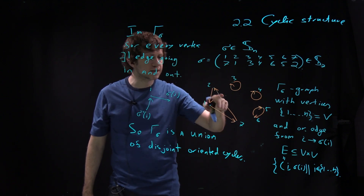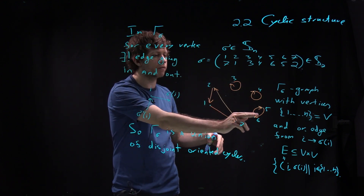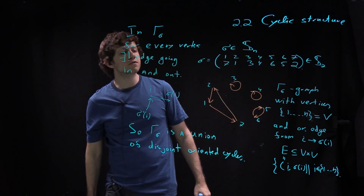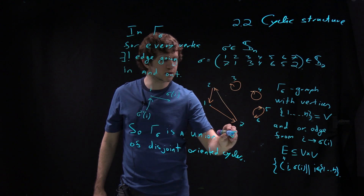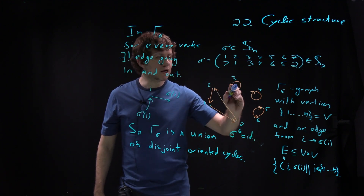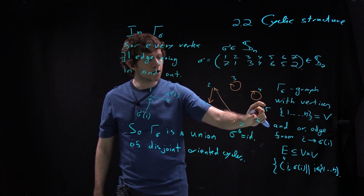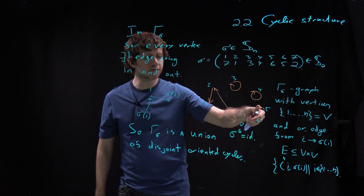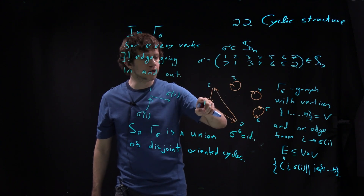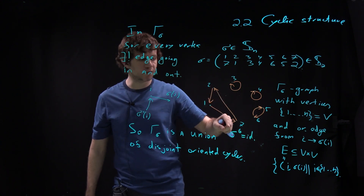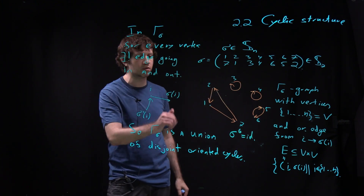This picture tells you exactly what sigma does: 1, 7, and 2 go in a circle; 3 goes to 3; 4 goes to 4; 5 and 6 exchange. From this picture it's completely obvious that sigma to the power 6 is the identity, because no matter how many times you apply sigma, 3 goes to 3, 4 goes to 4, 5 and 6 exchange every two steps, and 1 returns after three steps. So the order of sigma is 6.